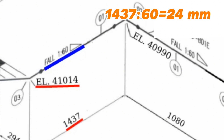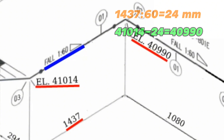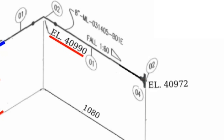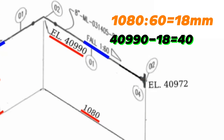The end of this section will be 24 millimeters lower than the starting elevation. Checking accuracy: 41,014 millimeters minus 24 millimeters equals 40,990 millimeters. The last section of the pipeline also has a slope of 1:60 over a distance of 1,080 millimeters. 1,080 divided by 60 equals 18 millimeters of drop. End elevation: 40,990 millimeters minus 18 millimeters equals 40,972 millimeters. The pipe slope calculation for this pipeline is completed successfully.